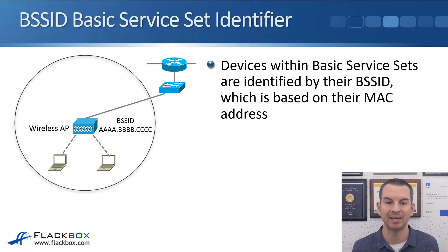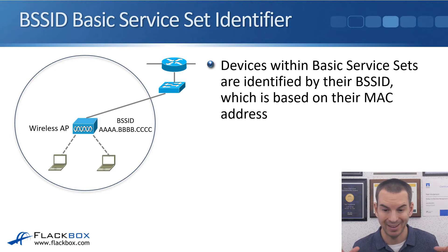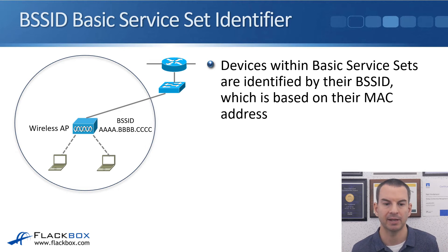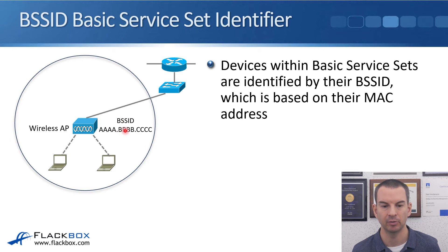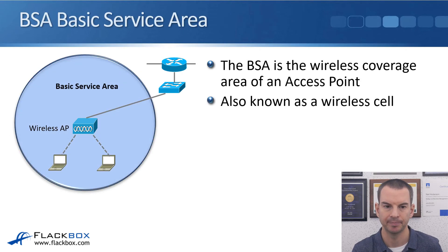BSSID is a Basic Service Set Identifier. Devices within the basic service set are identified by their BSSID, and that is based on their MAC address. In the example here, our wireless AP has MAC address A.B.C, which is used as its BSSID to identify it in the wireless network.